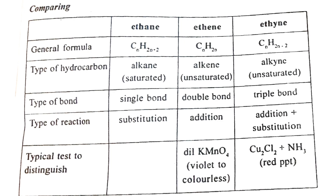Now let's talk about alkynes and their triple-bond reactions. A property of alkynes is the substitution reaction — formation of metallic acetylide. Ethyne undergoes this reaction. You can use copper acetylide compounds, which give a red precipitate (red PPT). This is the reaction for alkynes.